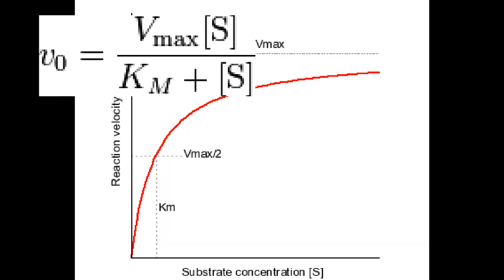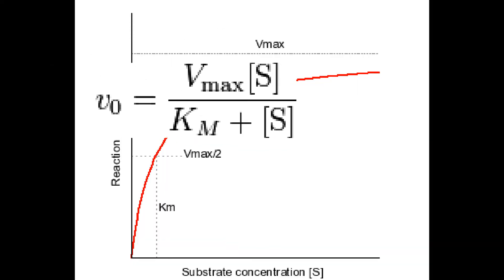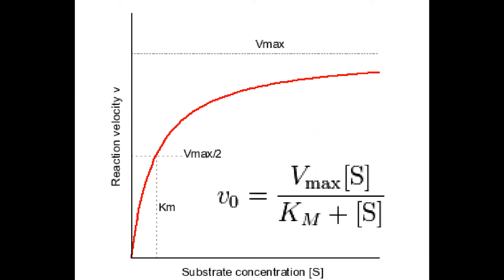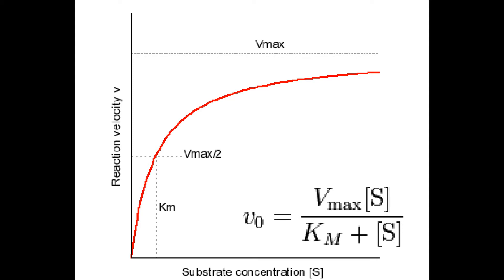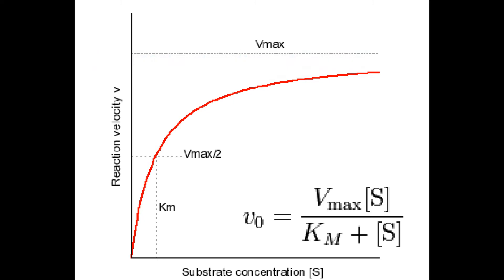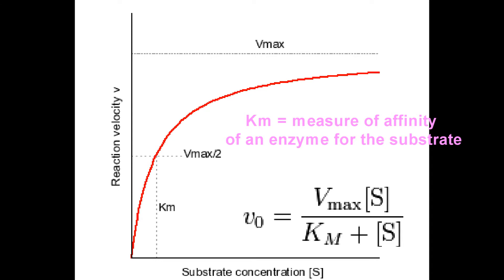Km can be used to characterize the affinity an enzyme has for a substrate. The significance of Km is that it's the substrate concentration at 50% of saturation — so we have 50% of the enzyme active sites occupied by a substrate, or half the Vmax. Since K2 is the slowest, Km is almost the dissociation constant for the ES complex, and it is a measure of how tightly the substrate is bound to an enzyme.